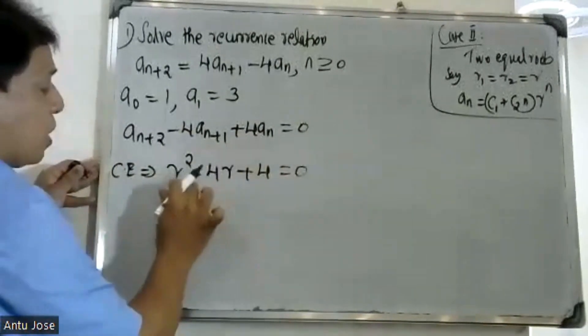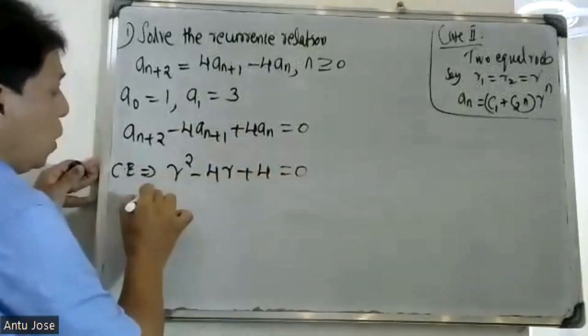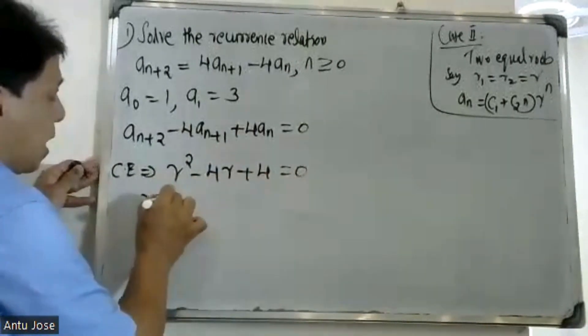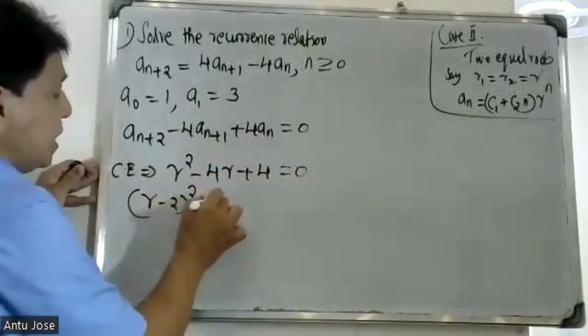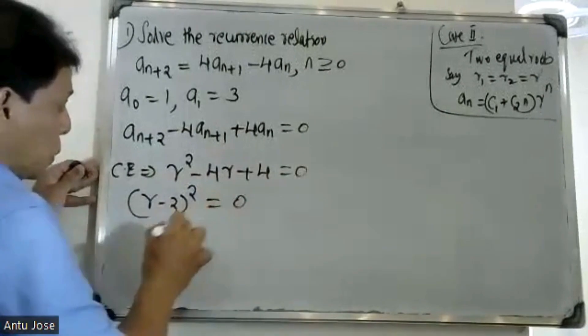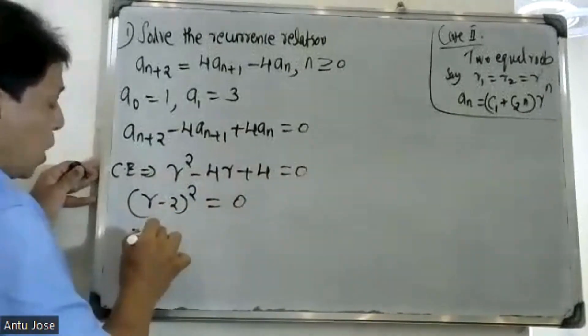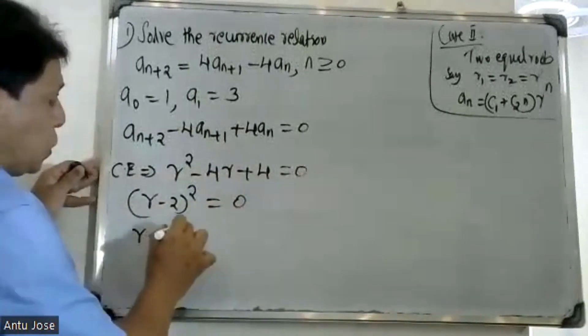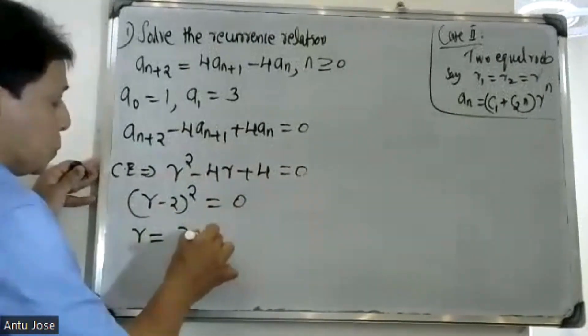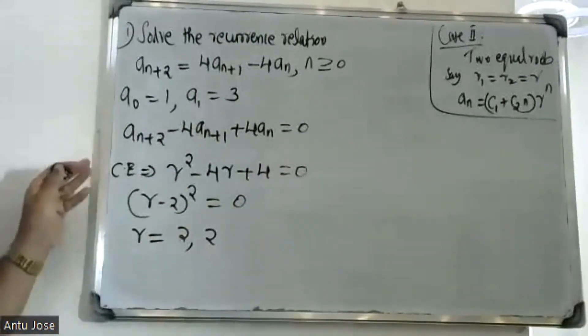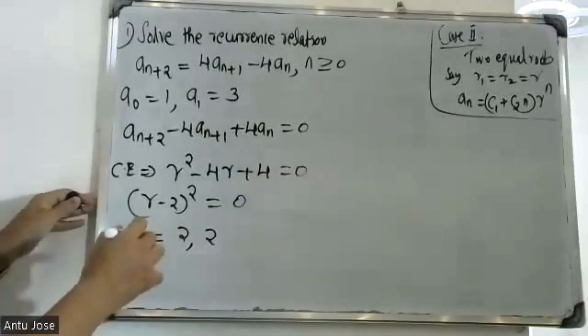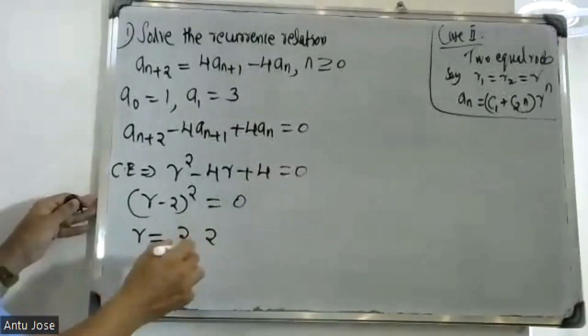The characteristic equation is r² - 4r + 4 = 0. Therefore r is equal to 2, and the roots are repeated — both roots are equal to 2.